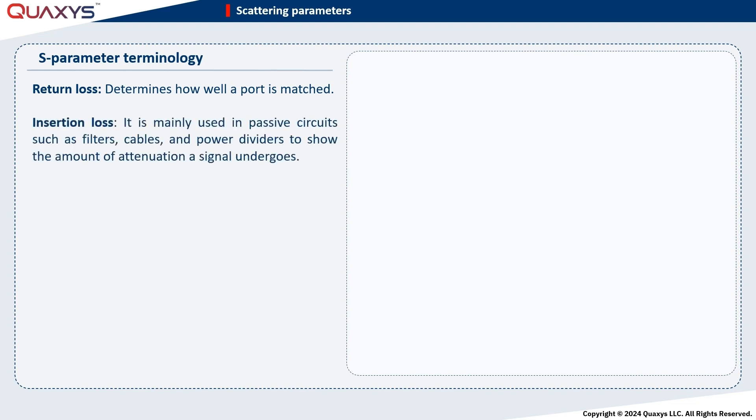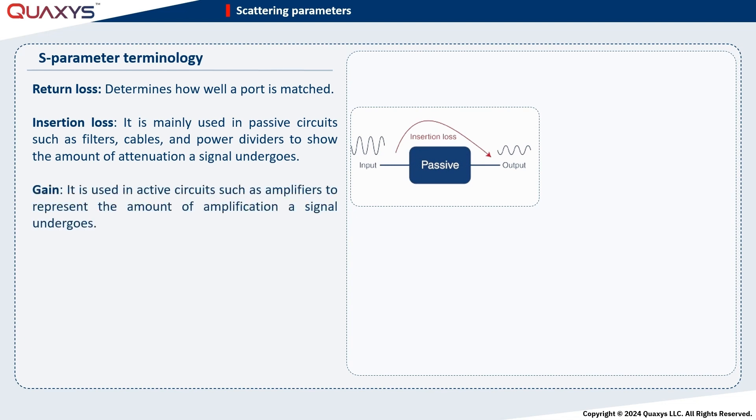Now, let's delve into the essential terminology for S-parameters. While the S-parameter between ports fundamentally represents a transmission coefficient, its nomenclature varies depending on specific properties and contexts. Previously, we got familiar with insertion and return loss. The return loss determines how well a port is matched. The insertion loss is mainly used in passive circuits such as filters and cables to show the amount of attenuation a signal undergoes.